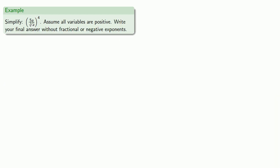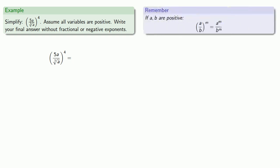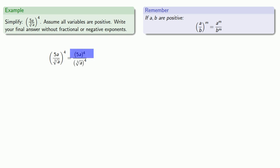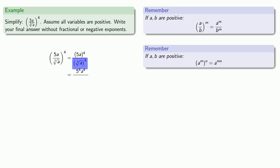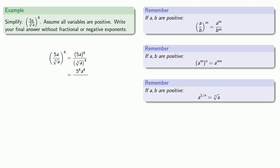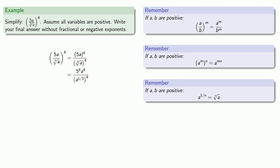Here the last thing we do is raise everything to the fourth power. This is the fourth power of a quotient, so that fourth power applies to both numerator and denominator. In the numerator we have a power of a product, so we can apply the exponent to each individual factor. The denominator is a bit more complicated — it contains a cube root, so we first rewrite it as an exponential expression using the fractional exponent rule.